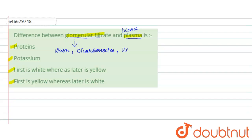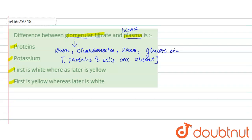What is not present in the glomerular filtrate? Large proteins and cells are absent. The reason they are absent is because the glomerular filtration process will not let proteins and cells pass through.